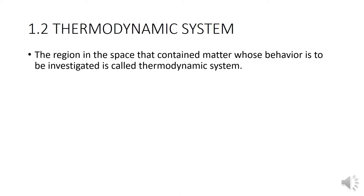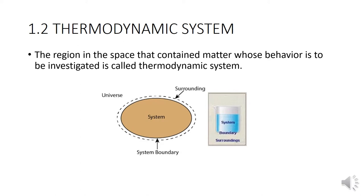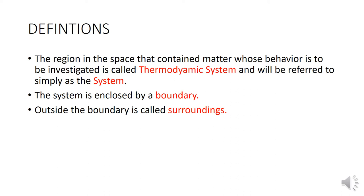Think of the white screen as the universe. If I draw a circle in this universe, whatever is inside the circle is called the system, outside is called the surrounding, and the line between the system and surrounding is called the system boundary.